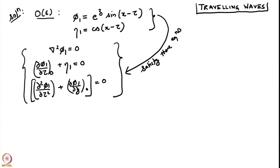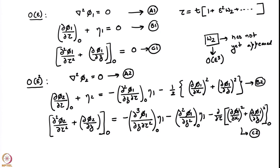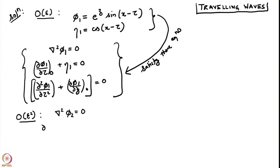At order epsilon squared, the Laplace equation grad squared phi_2 = 0 is homogeneous so there is nothing to be done there. But the other two boundary conditions — equations B2 and C2 — must be simplified, because their right hand sides depend on phi_1, its derivatives, and eta_1. We now know phi_1 and eta_1, so we need to substitute and work out the precise functional form of the right hand side of equations B2 and C2. Only then can we solve these equations.